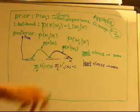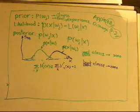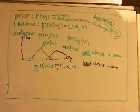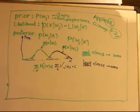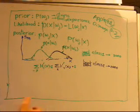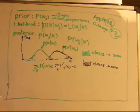This distribution is from class 2. So this is called the likelihood. Now you may wonder why we call it the likelihood. Let's see in this case.